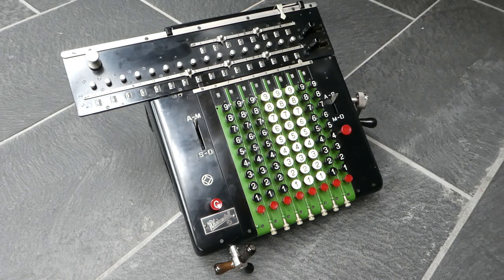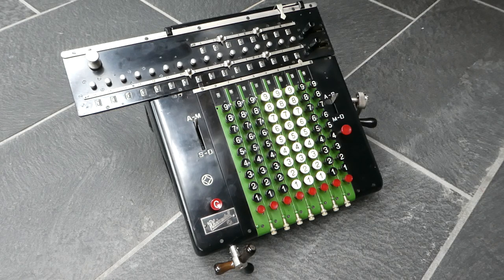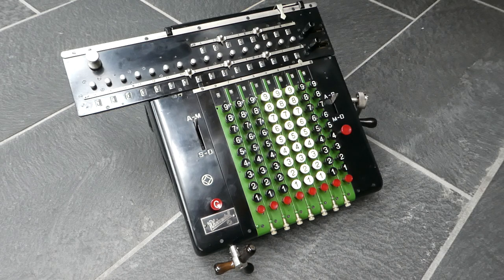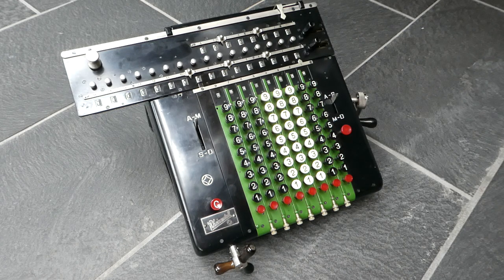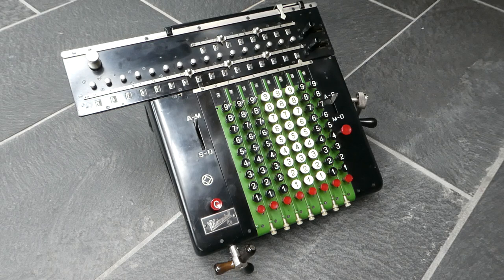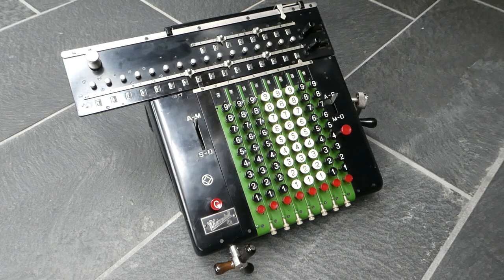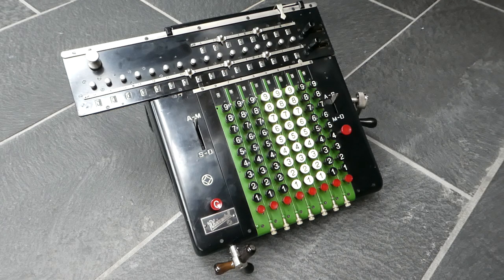Around 1930, which is when this particular model was made, they started putting much more automation in the machines. They put in electric drive and also included automatic division, and this is one which allows automatic division.